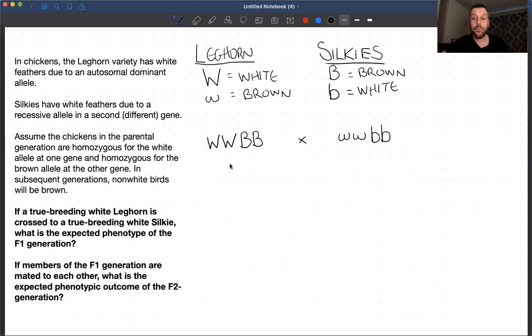So if we cross these two together, what do we get? Well, this should be becoming clear to you guys the way these problems work, but the cross would obviously give us this individual. So if a true breeding white Leghorn is crossed to a true breeding white Silkie, what is the expected phenotype of the F1 generation? So these are the parents. This is the parental generation. This is the F1. These guys would be, well, they have a capital W. So they would be white, because that's a dominant gene. So those guys would be white. That was the answer to the first question.